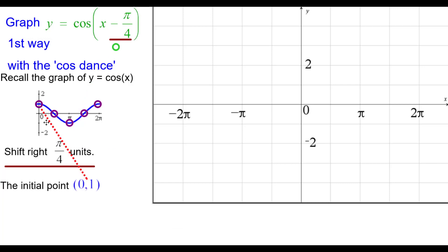The initial point on the cosine is at (0, 1), but we need to shift to the right pi over 4 units, and that will shift to the right to (pi over 4, 1). So let's plot that.